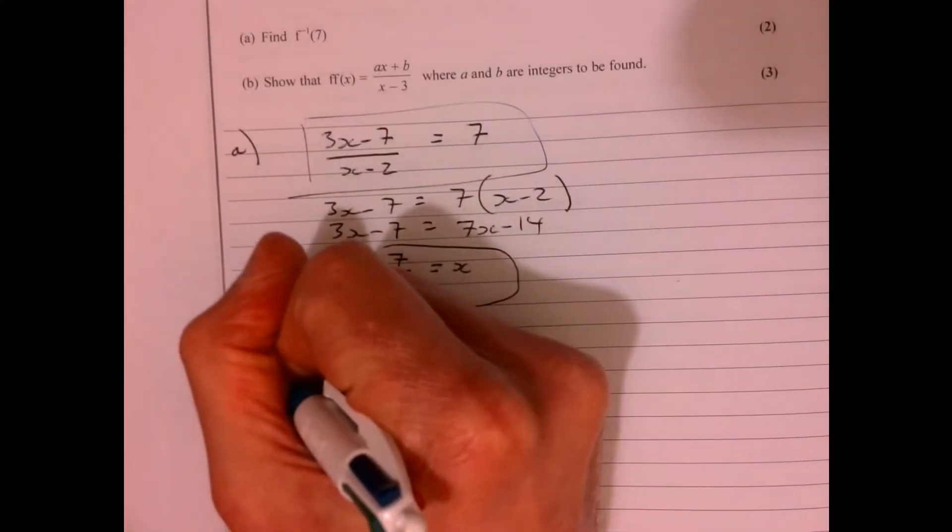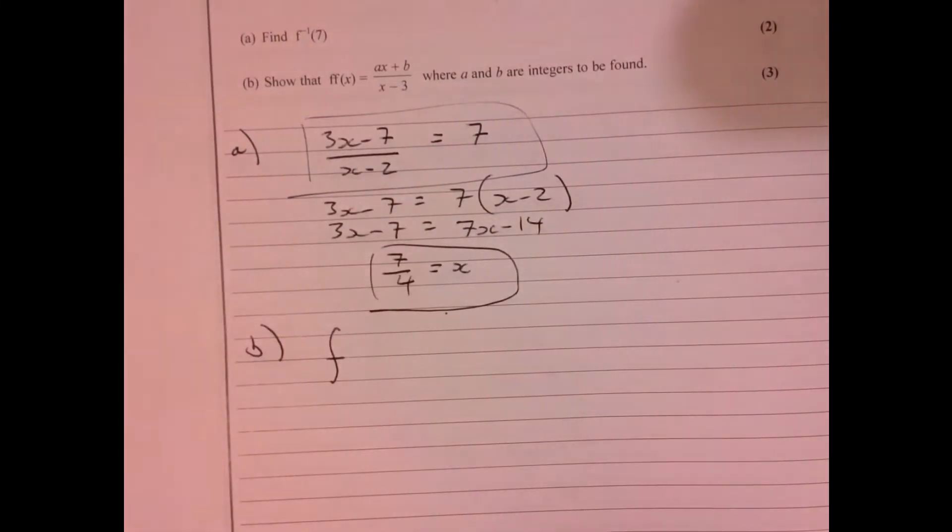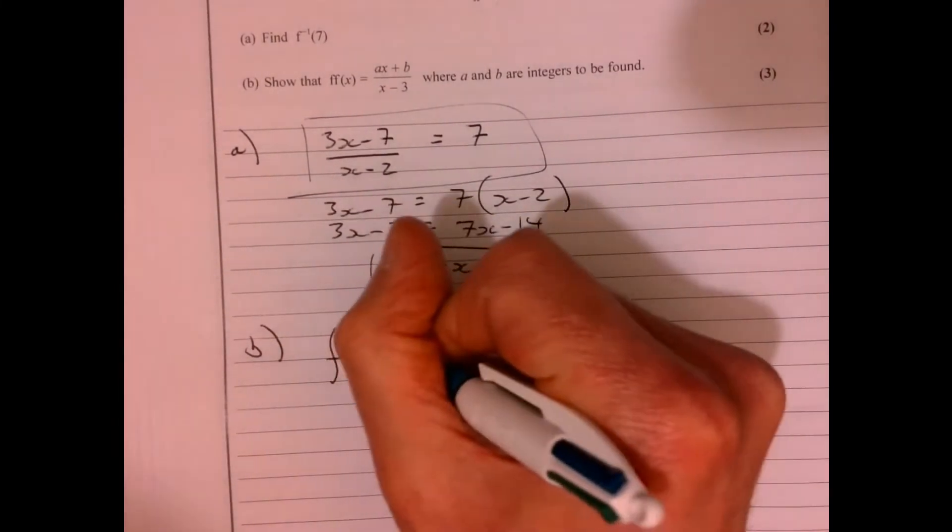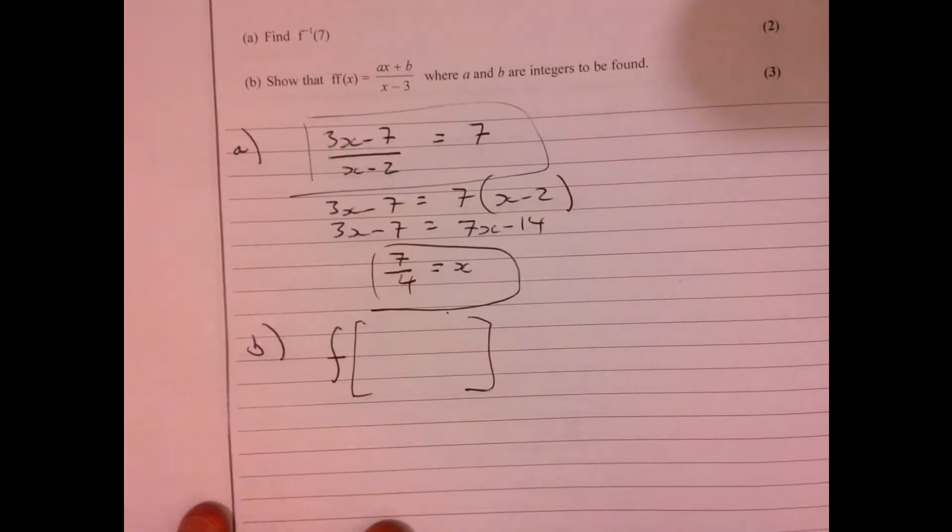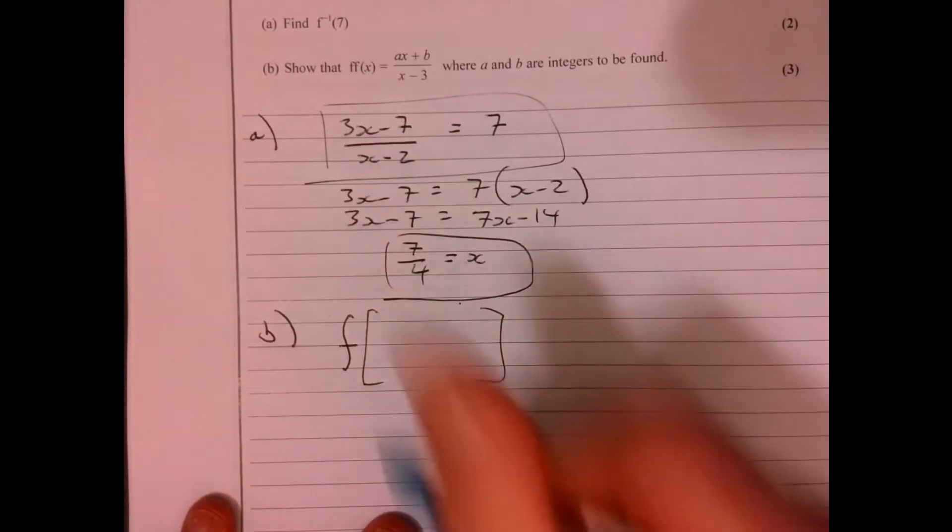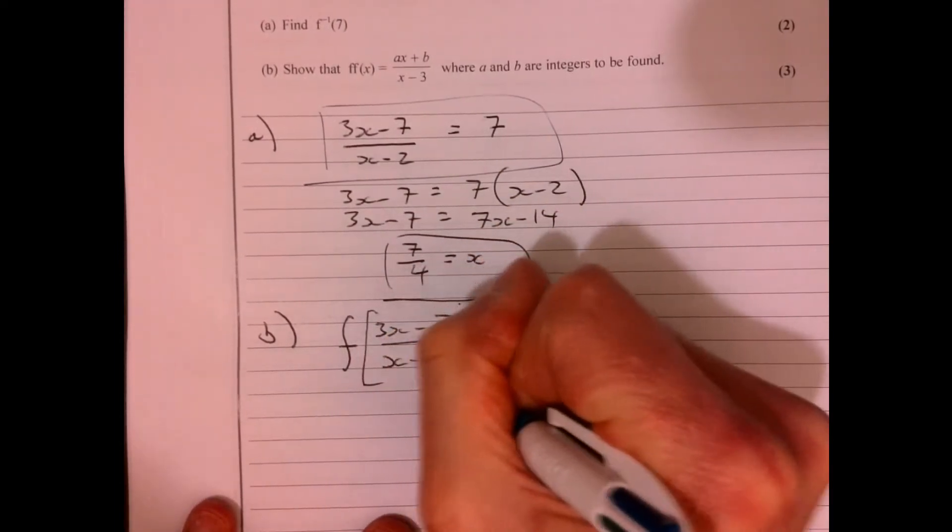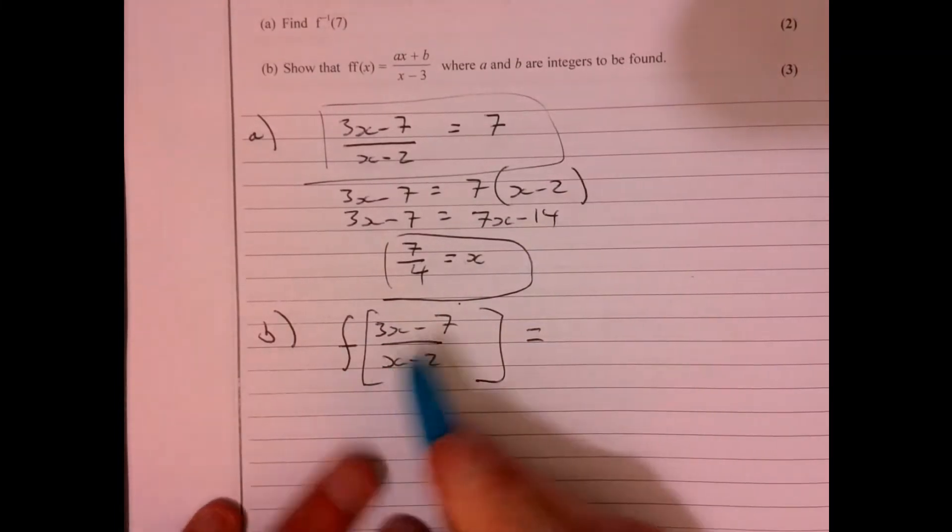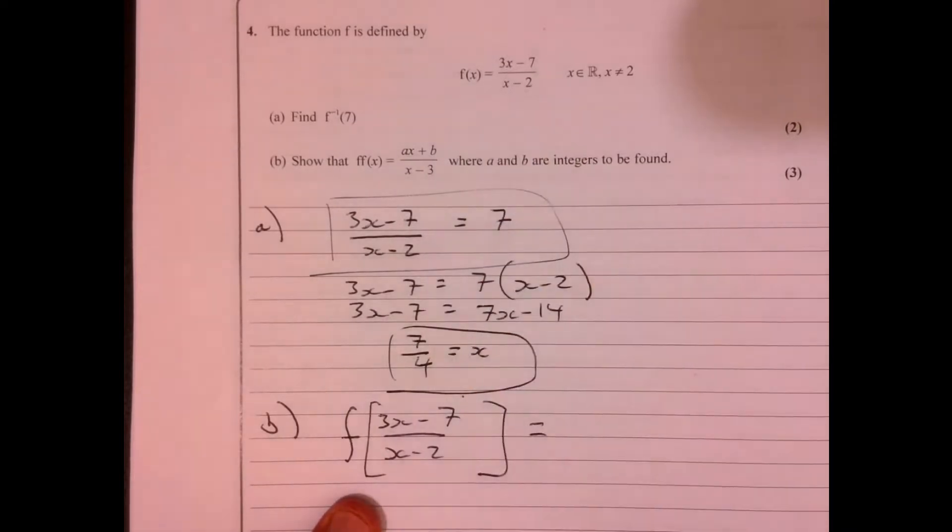Now part b. What we've got to do here, it means this. We've got to, it's the function of, we're going to put in fx inside the function. So we just need to write this down over x minus 2. So what that means is we're going to feed this into each part of x.